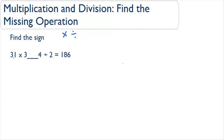Let's look at our problem. Here we have 31 times 3, some operation 4, divided by 2 equals 186.